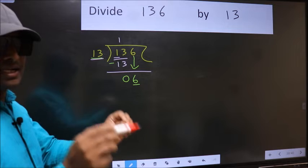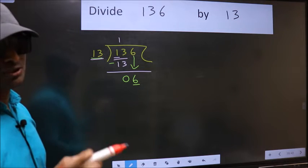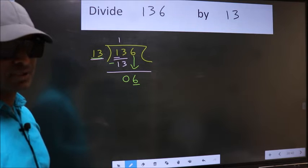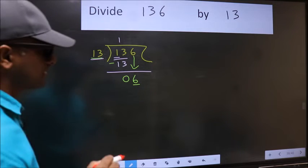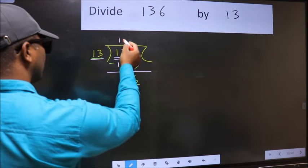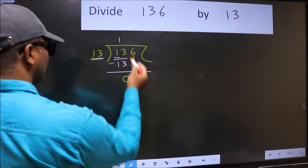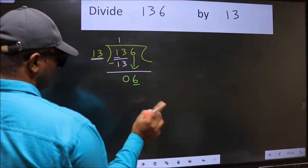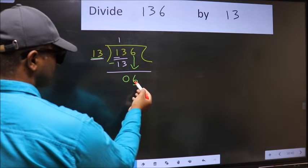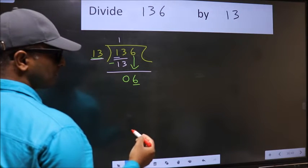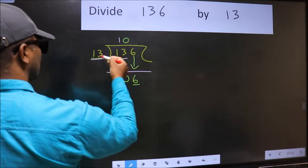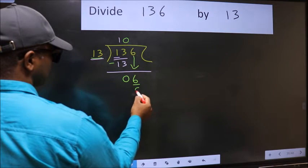Bringing down the number and putting dot and take 0 both at the same step — you should not do. Instead, what you should think of doing is which number should we take here. If I take 1, we will get 13. But 13 is larger than 6. So what we should do is take 0. So 13 into 0 is 0.